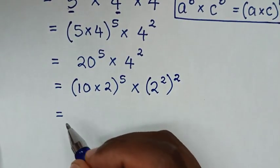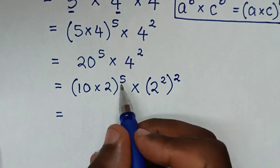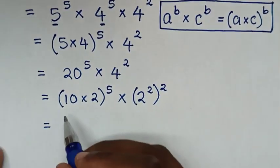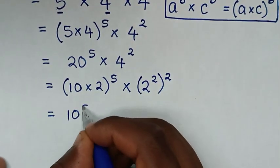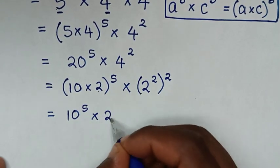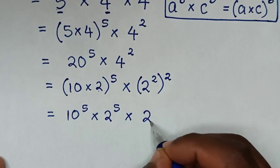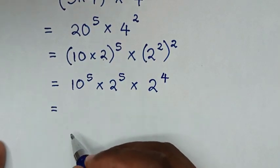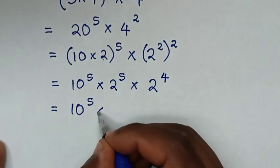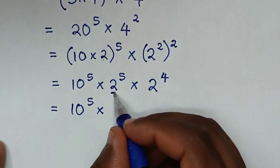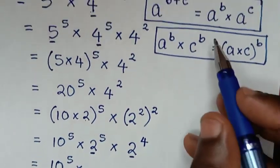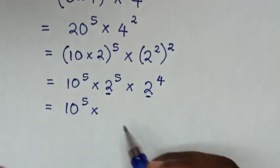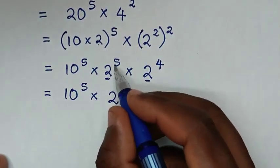Then, expanding the bracket to the power of 5, we get 10 power 5 times 2 power 5. Then 2 power 2, to the power of 2, becomes 2 power 4. Combining the same base of 2: 2 power 5 times 2 power 4 gives 2 power (5 plus 4).